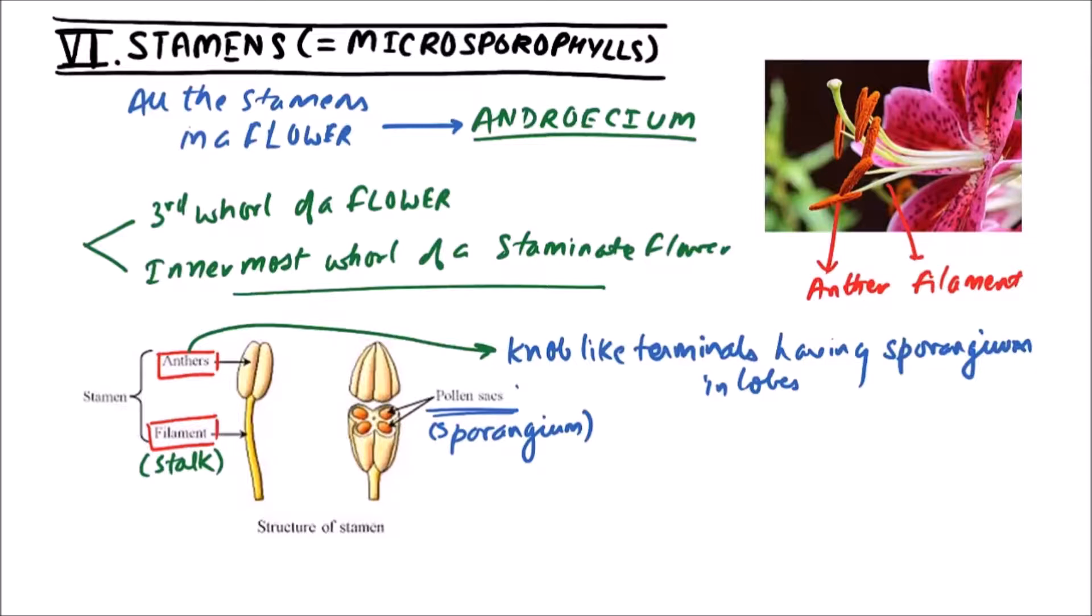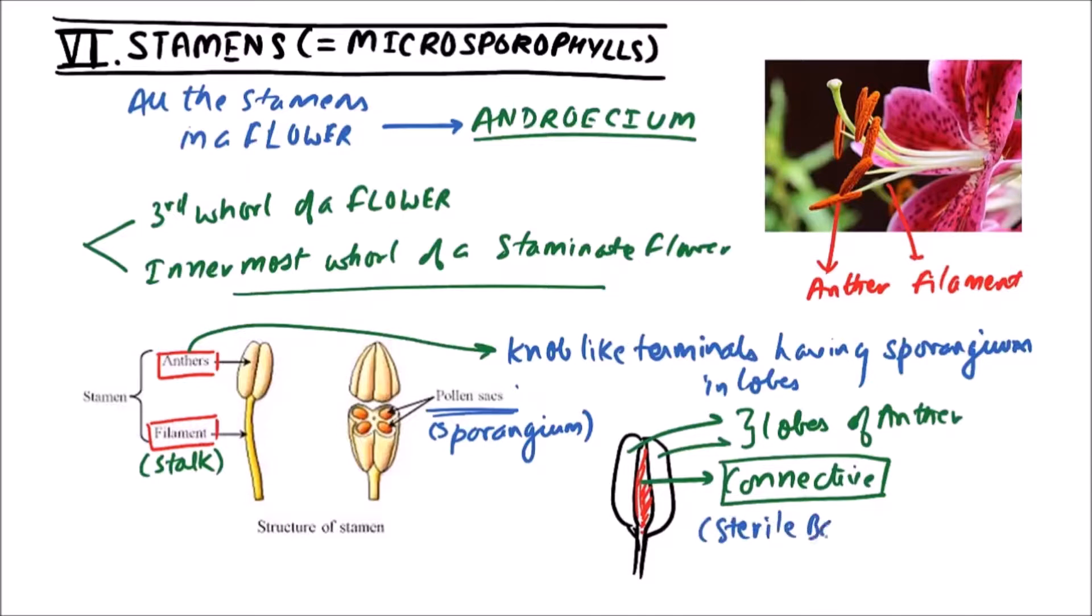If we view the anther posteriorly then it is clearly visible that the region is there in between the two lobes which is connecting them. This is known as connective. These are two lobes of anther and this one is connective which can be usually observed posteriorly. Now connective is the sterile band that connects the two lobes of anther posteriorly.